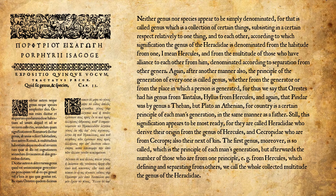Porphyry also says that the principle of generation — whether from a progenitor or a place — can constitute a genus. Orestes had his genus from Tantalus; Hylus from Hercules. Pindar was by genus a Theban, but Plato an Athenian, because country is a principle of each man's generation just as a father is. The word 'genus' itself relates to generation or origin — like 'genesis' — establishing a category based on where something comes from.